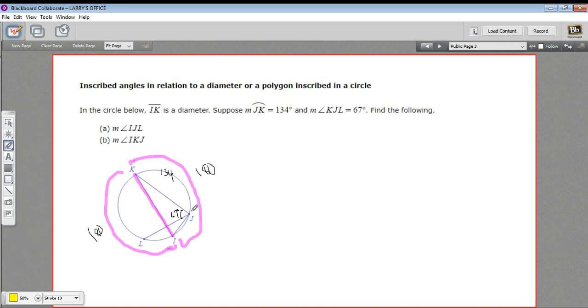So we want to find angle IJL. So IJL is this angle right here. And I guess that's hard to see. Maybe that's better. And then angle IKJ, that's this angle right here. Okay. So we want to find those angles. They correspond to these arcs. So this arc and this arc. So those two little pieces is what we want to find.